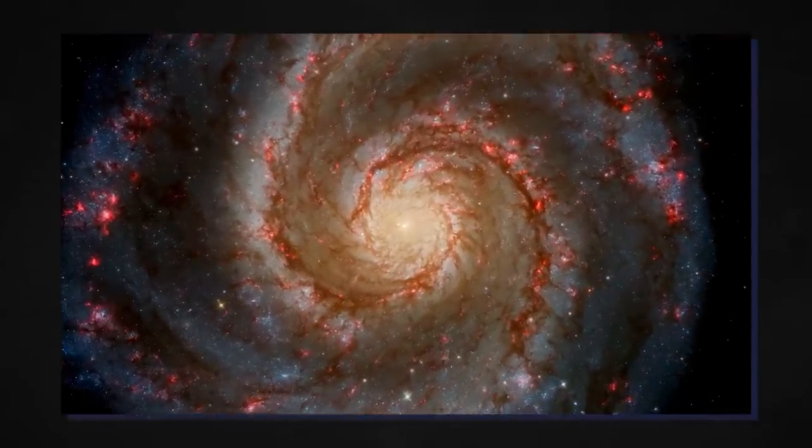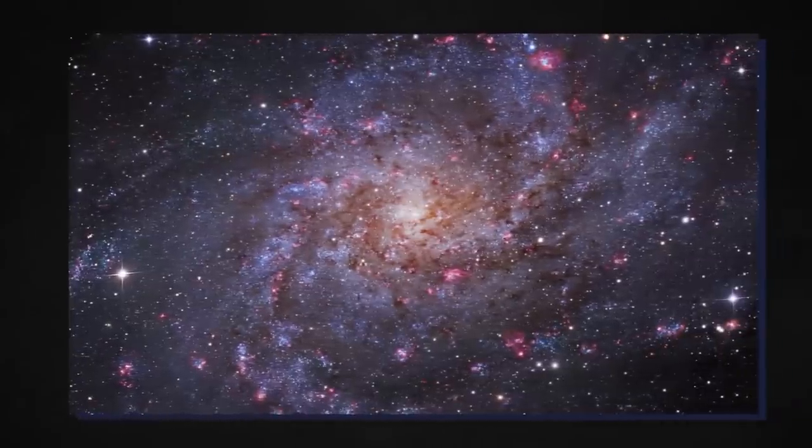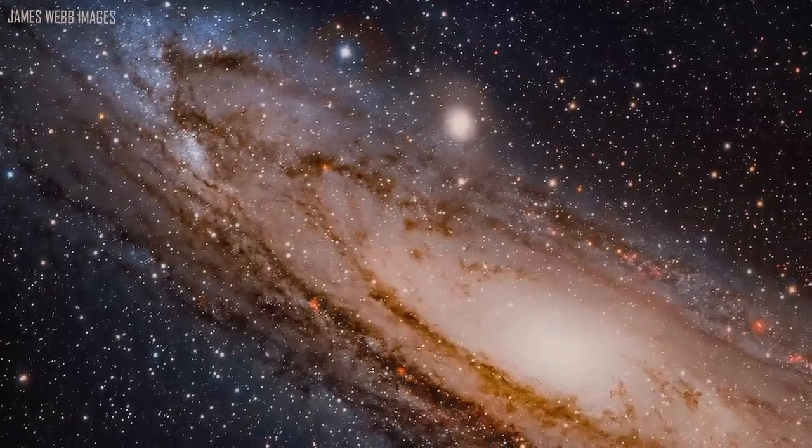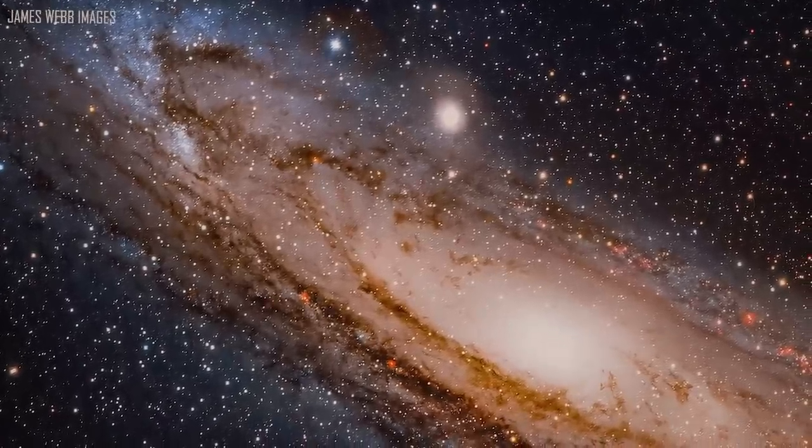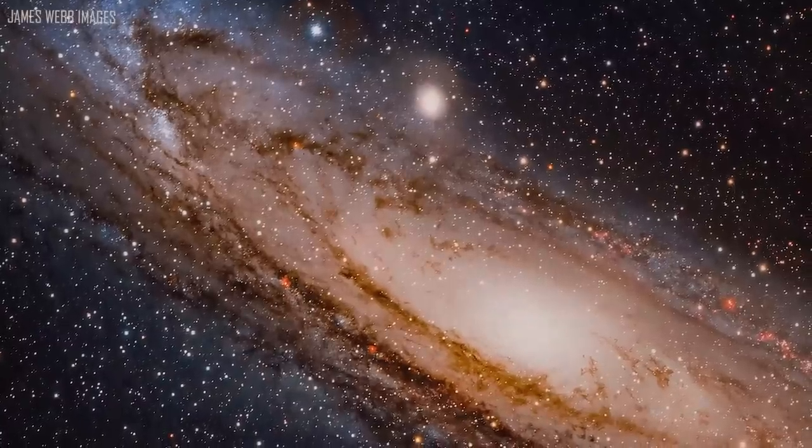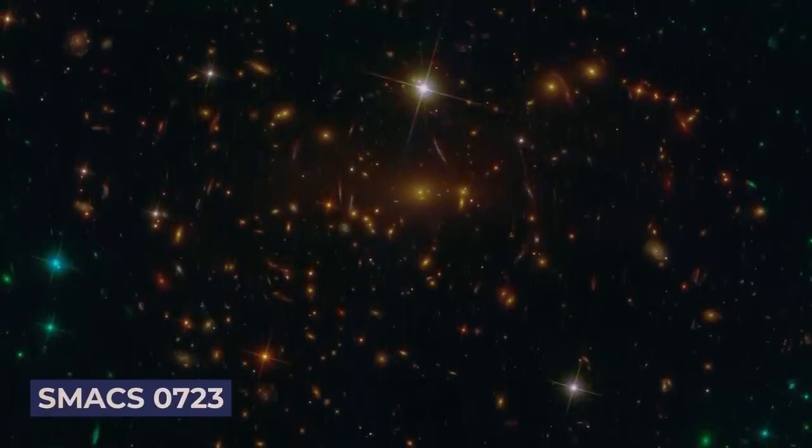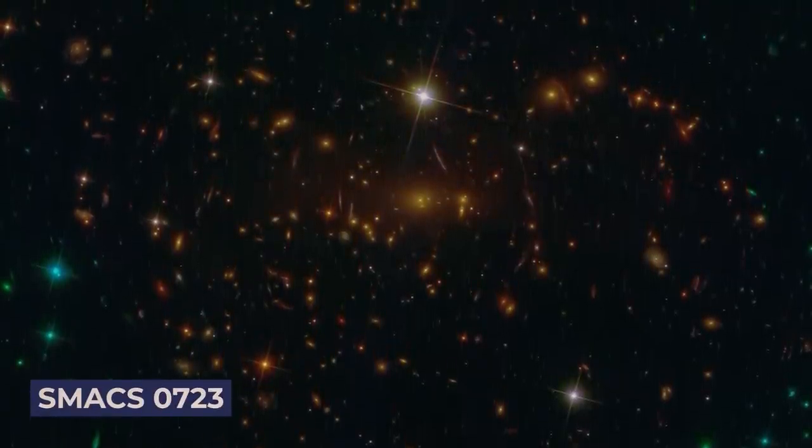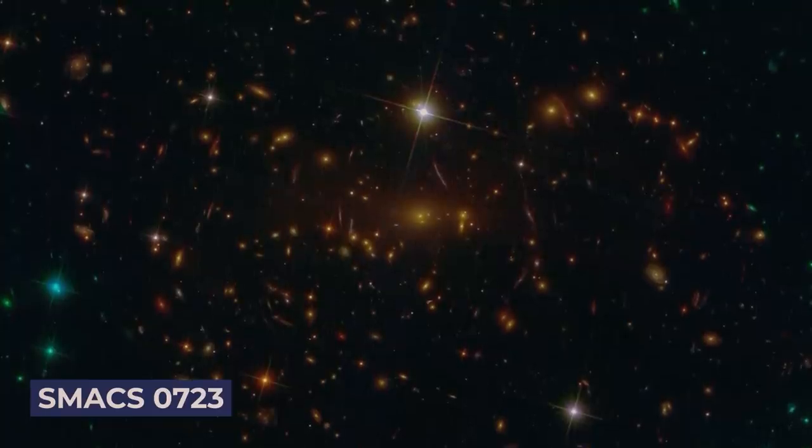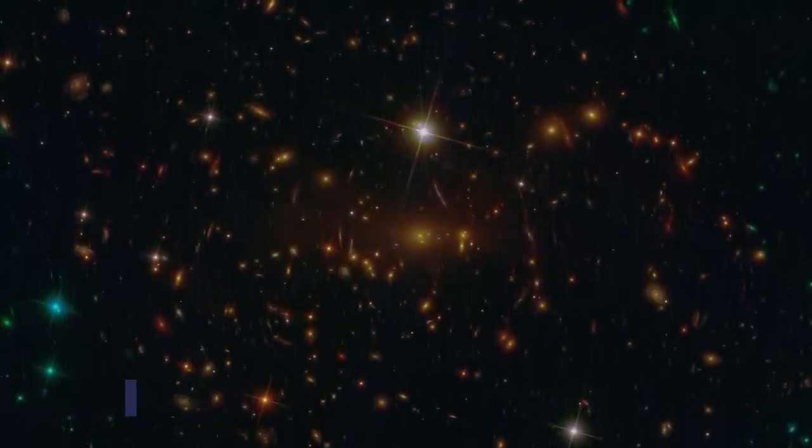The James Webb Space Telescope first took the world by storm in July 2022, when NASA released the telescope's first new images of stars, galaxies, and an exoplanet. Webb's image provides fresh insights into how galactic interactions may have driven galaxy evolution in the early universe. The first image the James Webb Telescope released displayed a group of galaxy clusters called SMAX 0723.